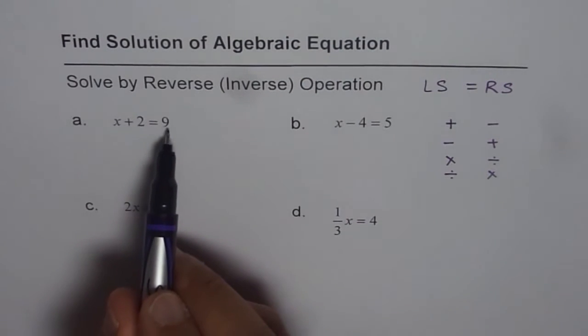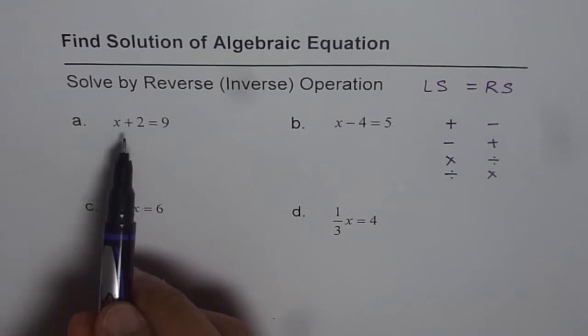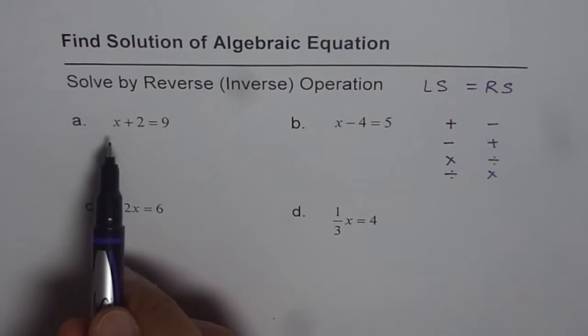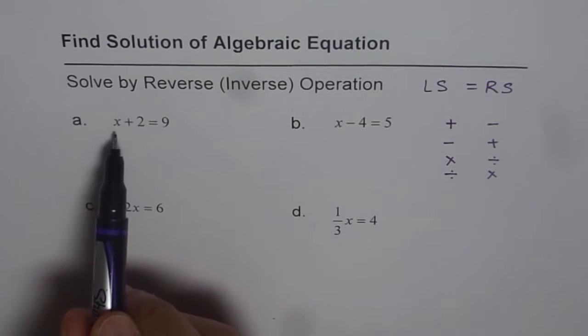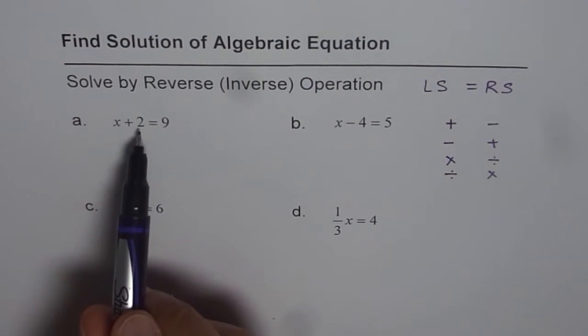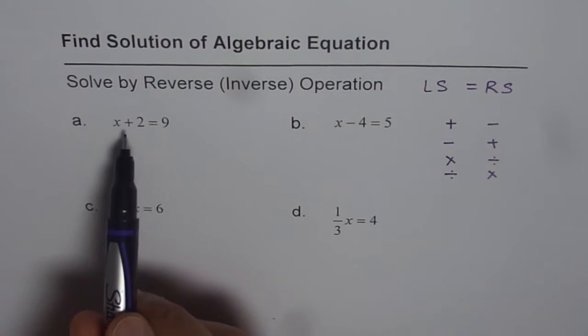x plus 2 equals 9. The idea is to find the value of x. Finding x really means isolate x - get rid of everything else. We have plus 2 here. How will I get rid of plus 2? By adding the reverse of plus 2. In this case, reverse of plus 2 is minus 2.